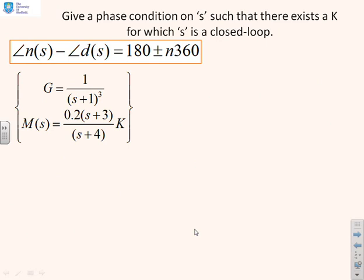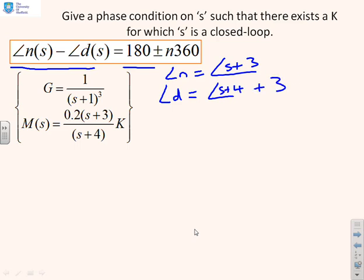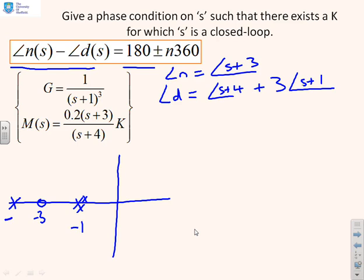Here's a different example, just to check that we've got it. Again, here's the phase requirement: arg n minus arg d is 180 plus or minus n times 360. In this case, arg n equals the argument of (s plus 3). The argument of d is the argument of (s plus 4) plus 3 times the argument of (s plus 1), because I have (s plus 1) cubed. Let me do a little sketch of where these poles and zeros are. I've got three poles at minus 1, a zero at minus 3, and another pole at minus 4.